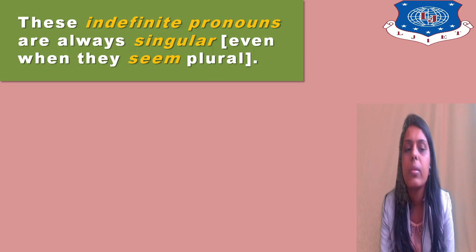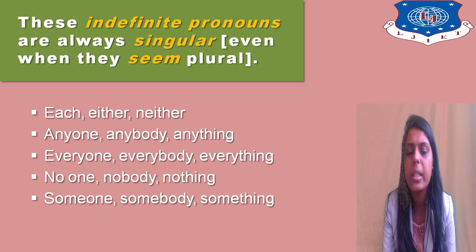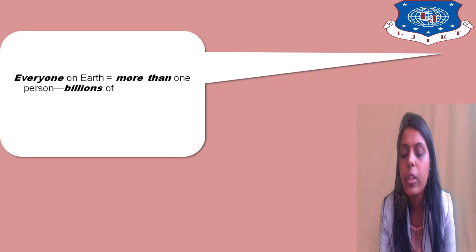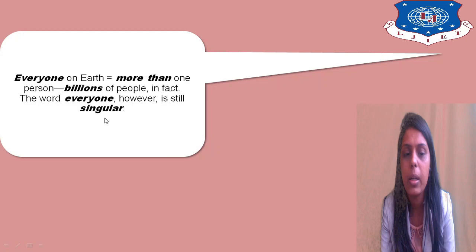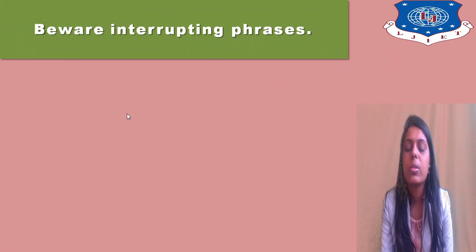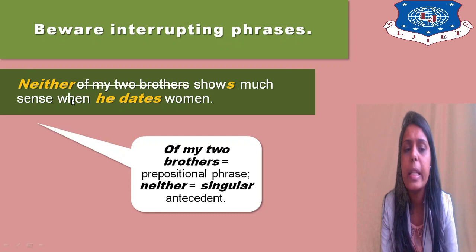These indefinite pronouns are always singular, even when they seem plural: each, either, anybody, anything, everyone, everybody, everything, no one, nobody, nothing, someone, somebody, something — these are all indefinite pronouns. Whenever you use indefinite pronouns, the antecedent is always singular. So 'everyone on the earth' refers to billions of people, but the word 'everyone' is still singular.